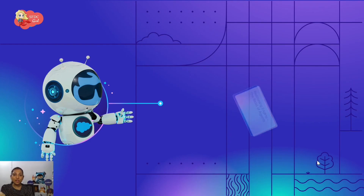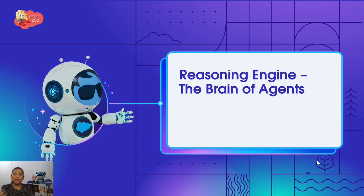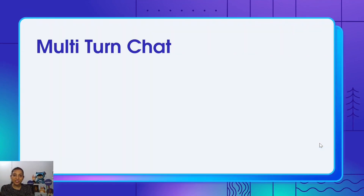The next topic is the Reasoning Engine — that's the brain of AgentForce. It's what gives AgentForce the power to perform tasks, execute actions, and produce output. We're going to talk about what the reasoning engine provides AgentForce to give it that power.